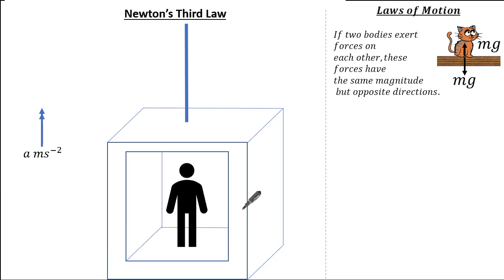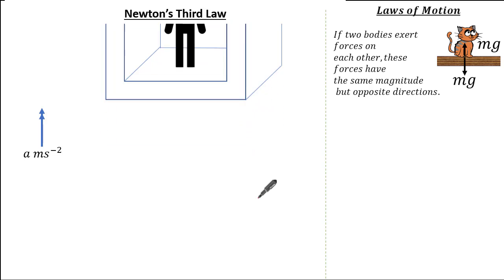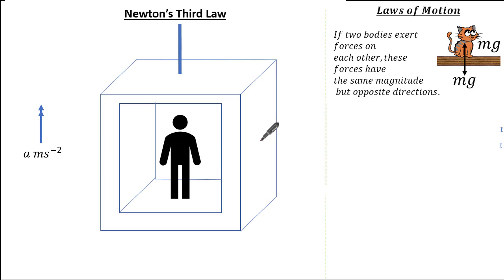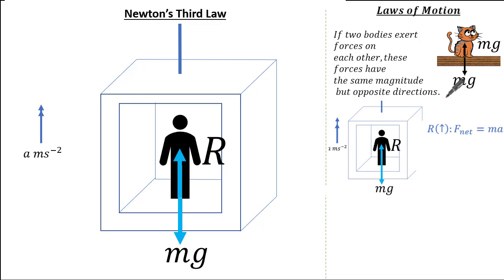Now let's put this elevator in motion — it's accelerating upwards. As it accelerates upwards, we all feel that downward force as we move upwards, so this means we have a different net force due to acceleration, and there will be a different normal reaction acting upwards. Combining Newton's second law and third law, we can resolve vertically upwards, taking up as the positive direction. Using Newton's second law, the net force is equal to mass times acceleration.